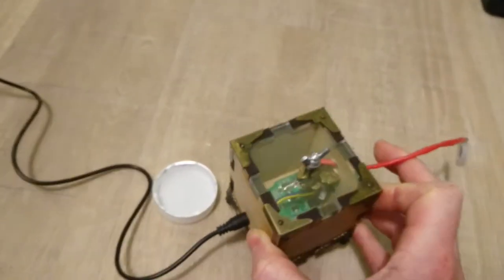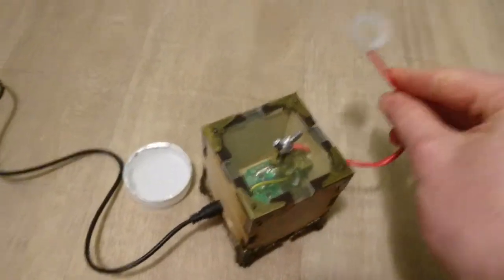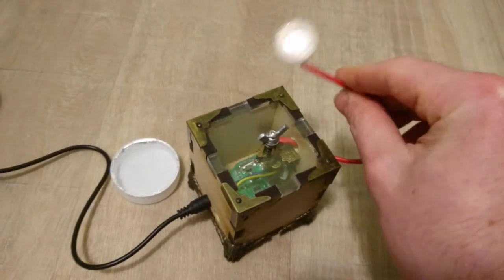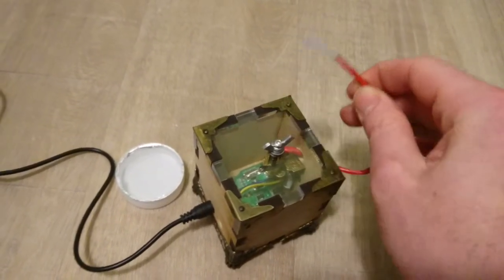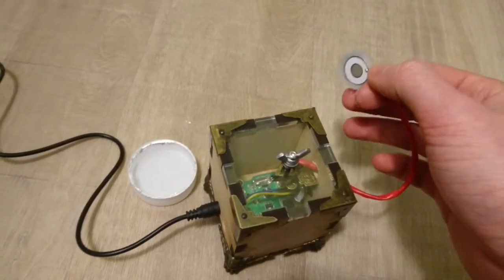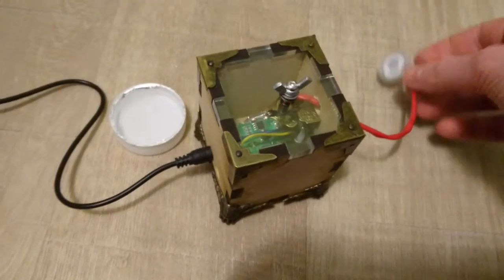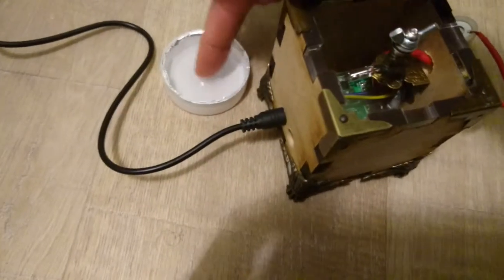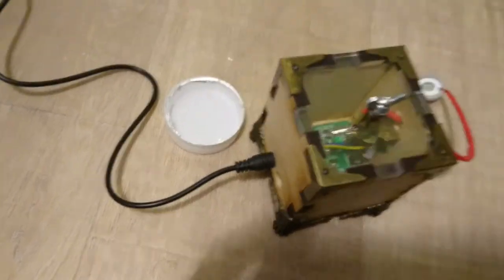That's an ultrasonic that you just heard. This is a mist maker, so it kind of lets this little plate vibrate at a certain frequency and that will turn the water into mist.